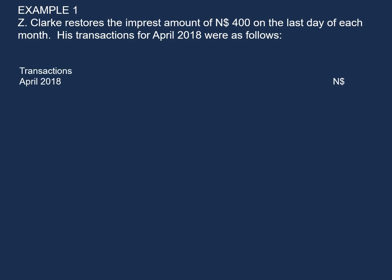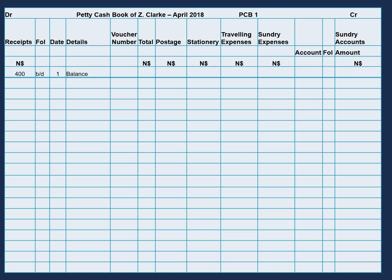Now let's have a look at the transactions. On the 1st of April, petty cash in hand is a question mark. We need to find out what amount is the petty cash on hand. Z-Clark restores the impressed amount of $400 on the last day of each month, so the last day of the previous month was 31 March. On 31 March, Z-Clark restored the impressed amount with $400, so the following day, 1 April, our petty cash on hand will be $400. Our $400 is on the debit side, and this will be our opening balance — balance brought down.